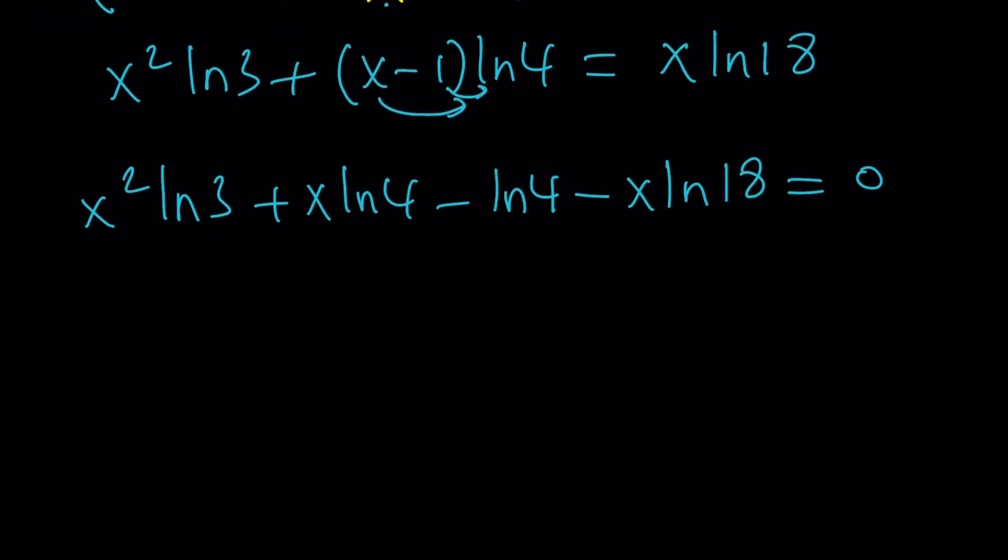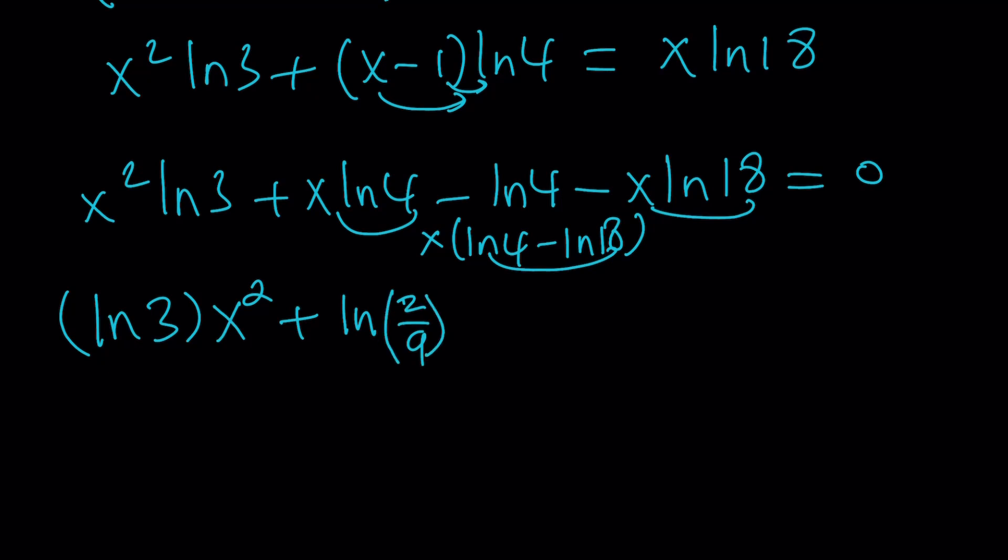Let's bring the ln 18 over here and distribute. We're going to get x squared ln 3 plus x ln 4 minus ln 4 minus x ln 18 equals 0. Great. Now, this is going to turn into a quadratic because I can write it as ln 3 times x squared. And then these two can be put together. If you factor out the x, you're going to get x times ln 4 minus ln 18.